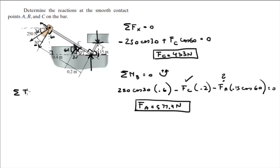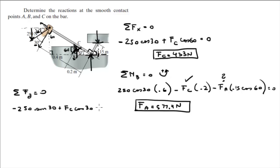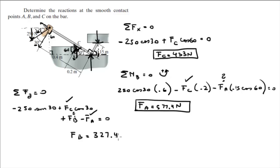All we're missing now is the sum of the forces in Y equals 0. So: minus 250 × sin(30) — this 30 right here, going straight down — plus FC × sin(30) giving the Y component, plus FB minus FA equals 0. We have FC, we found FA, all we're missing is FB. Simple algebra: plug in FA and FC, solve for FB, and you get FB = 327.4 Newtons.